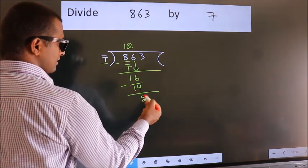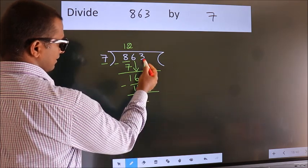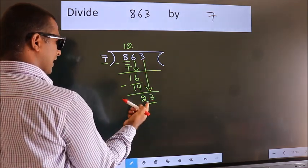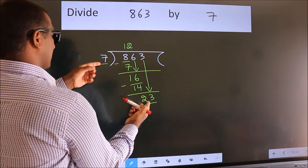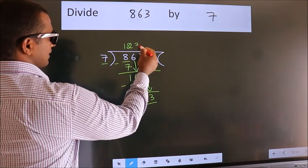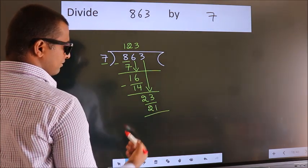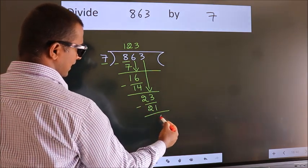After this, bring down the beside number. So 3 down. So 23. A number close to 23 in the 7 table is 7 threes 21. Now, we subtract. We get 2.